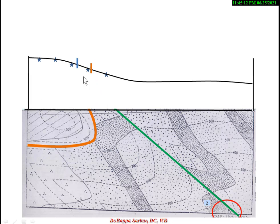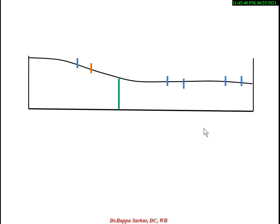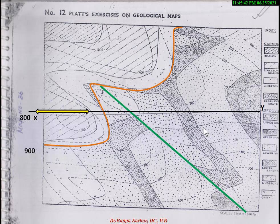After drawing the geological section, locate the unconformity line on it. This is the unconformity line, and these are the bedding lines. Mark these bedding lines along the section — this is one bedding line, this is another bedding line, and this is another bedding line.